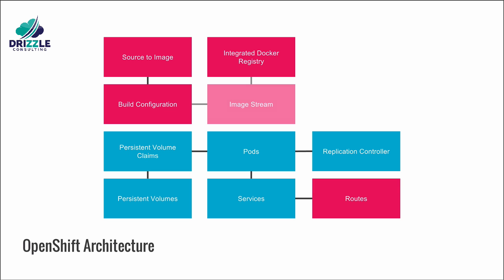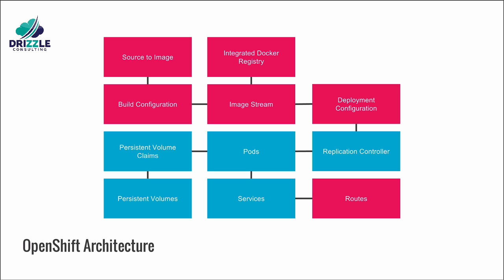OpenShift tracks images through the image stream component. The deployment configuration defines the template for the pod and manages the deployment of new images or configuration changes — think of a deployment configuration as a single microservice. The replication controller will then manage the pods and keep them running. This was a short introduction to the OpenShift architecture and components that can be very helpful with the rest of this workshop.